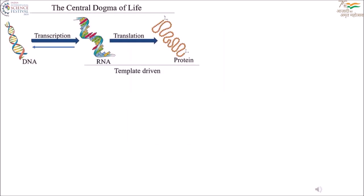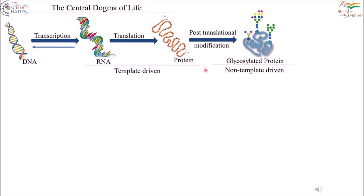We know the central dogma of life, which says DNA stores information to make RNA, RNA stores information to make a protein — but what after that? How is this protein converted to its matured form? That happens by some post-translational modifications, of which one is glycosylation.